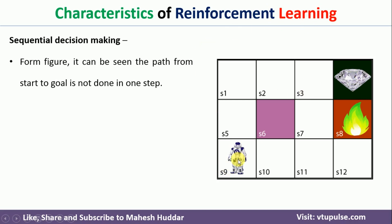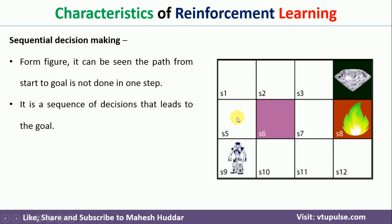In reinforcement learning, the agent cannot go directly from S9 to the goal state — that is not possible. It has to follow a path, going from S9 to S10, then S11, S7, S3, and finally to the goal state. Or it can take another path through S5, S1, S2, S3, and then to the goal state. The decision making is done sequentially, step by step, and any one mistake may lead to failure.